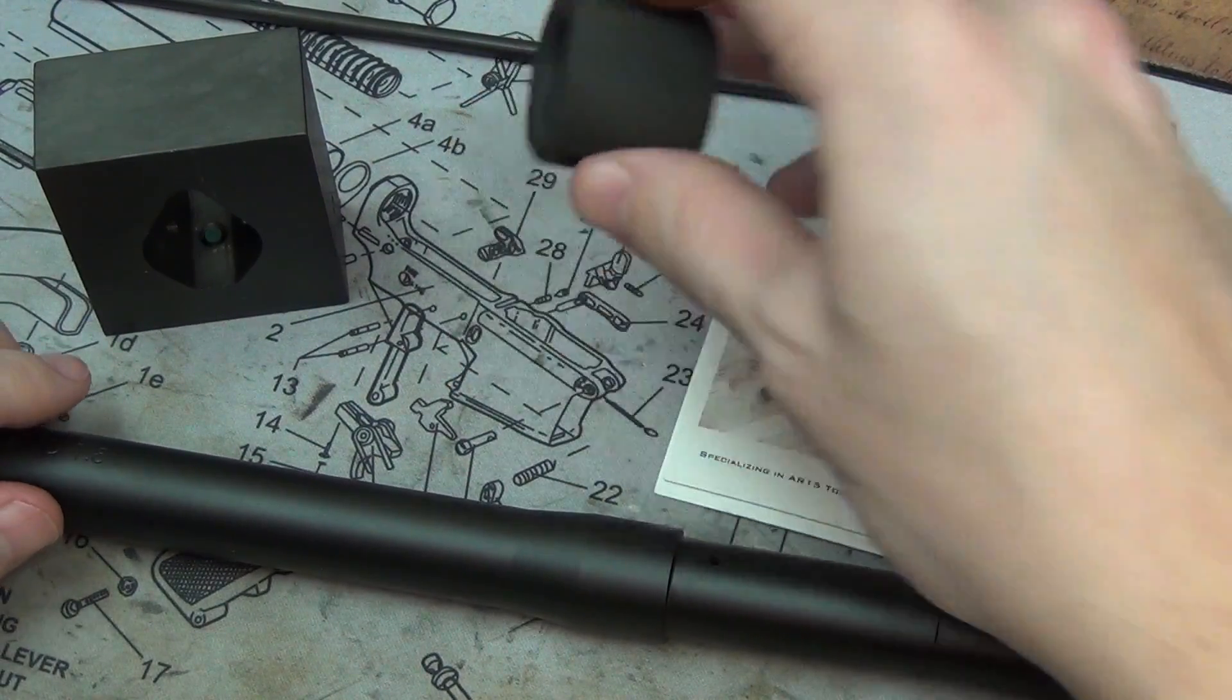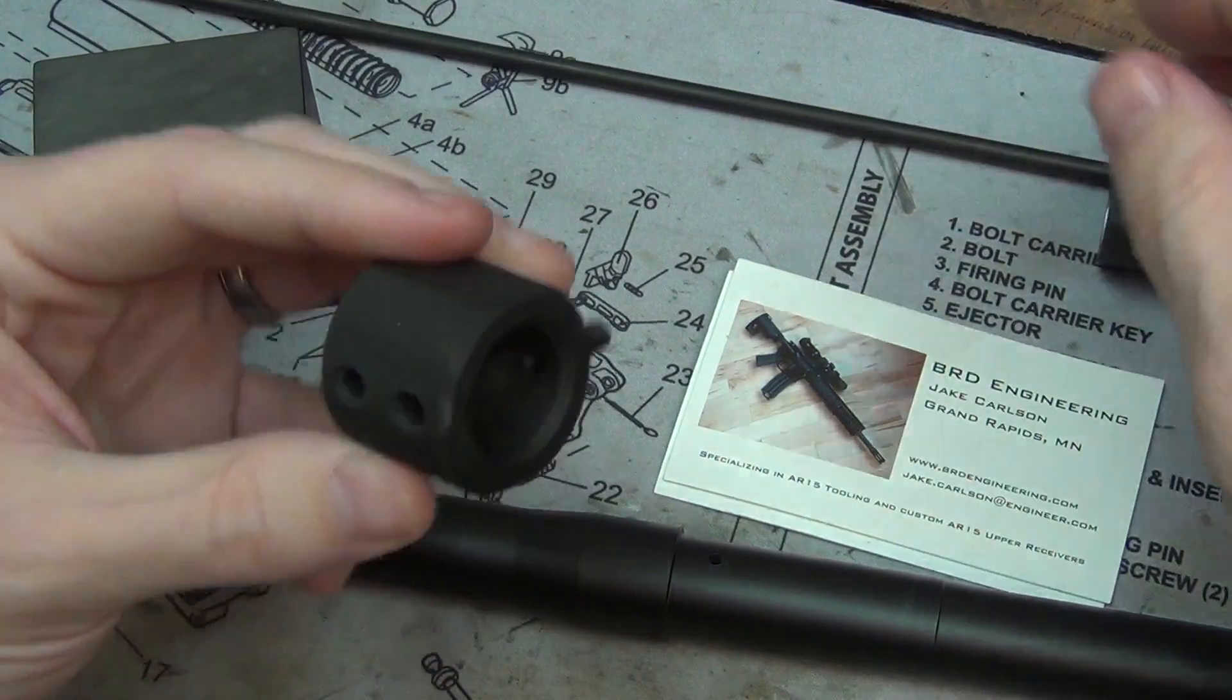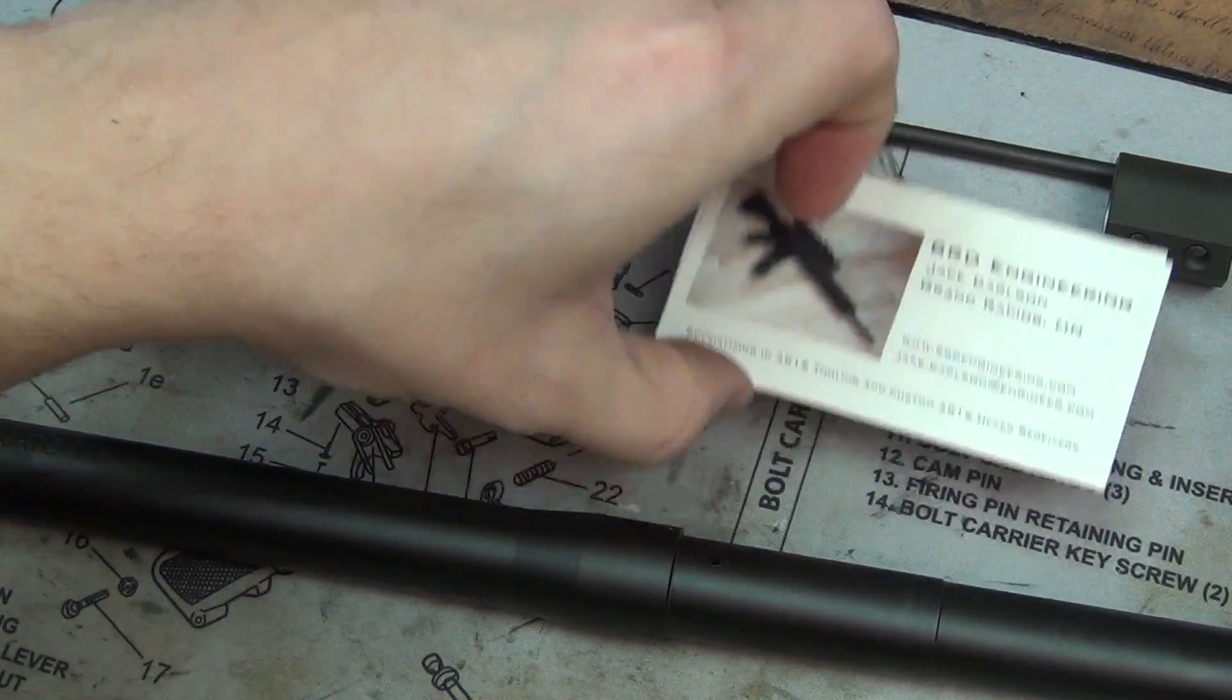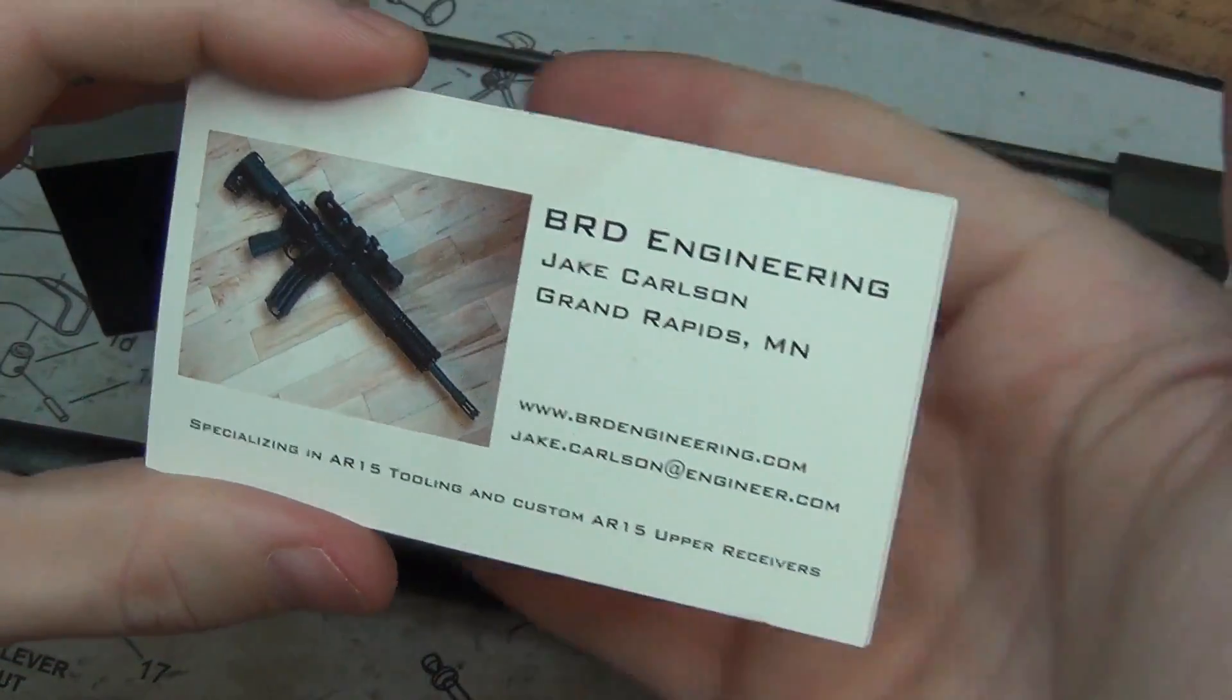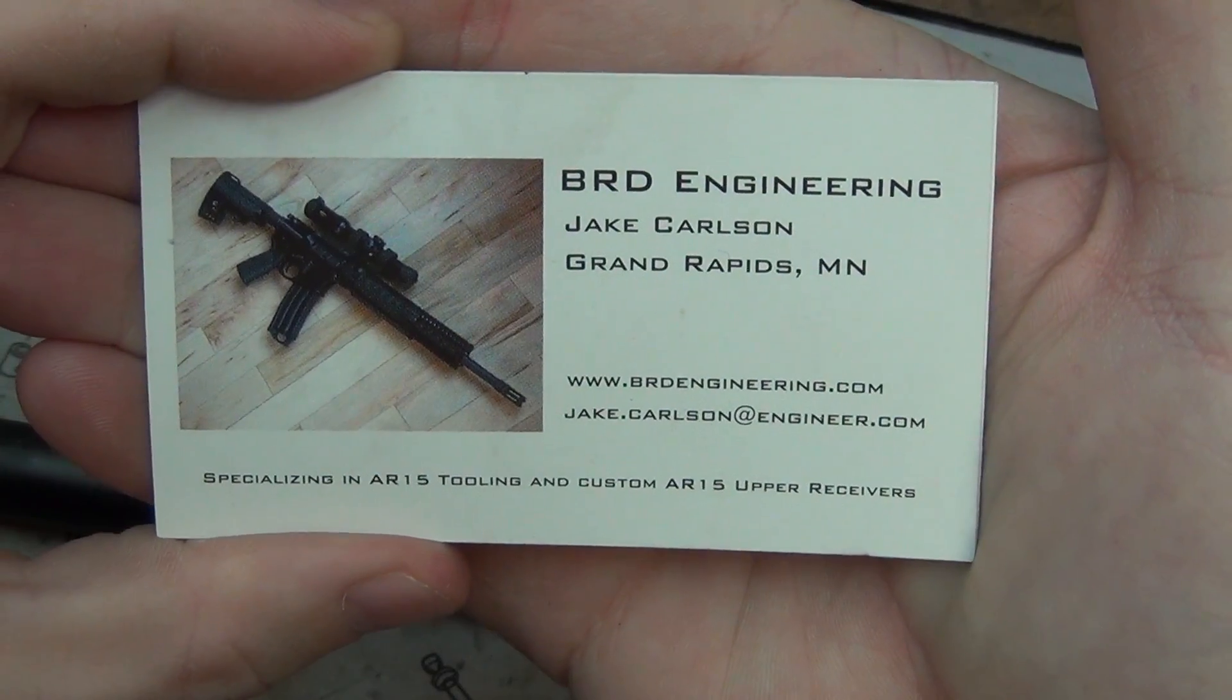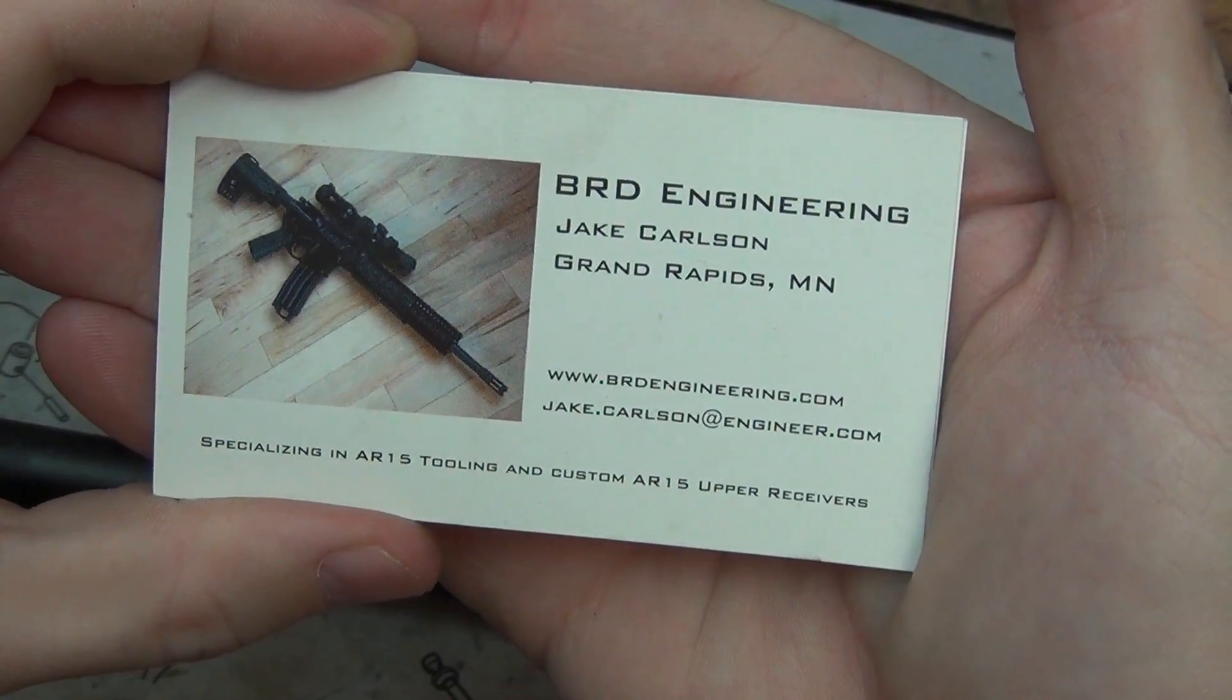I'm going to slide this jig over and drill the two dimples. By the way, this jig is available at BRD Engineering dot com, also available on Bravo Company and Rainier Arms. I will have all the information down below in the information box.